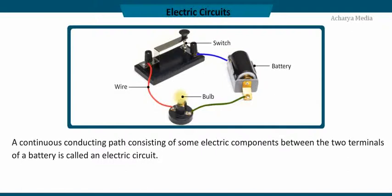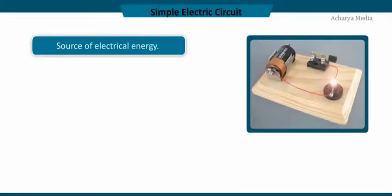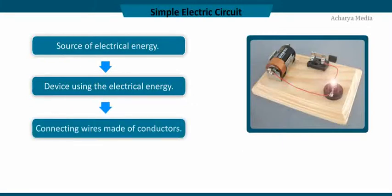A simple electric circuit consists of the following: source of electrical energy, device using the electrical energy, and connecting wires made of conductors. The simple circuit shown here includes a cell, lamp, switch, and connecting wires.